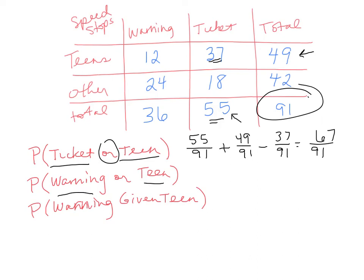That's how we do that one. Okay, warning or a teen. My total warning, I have 36 total people that got warnings. I add that to the probability of selecting a teen. And I subtract the people that are in both categories. That's these 12 right here. And I get 73. And then I would divide that by 91. And that would give me my decimal answer.